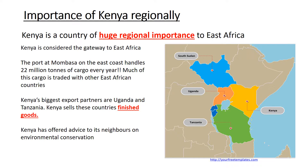Kenya also has significant regional importance because of its economic size and its very important port, Mombasa, which we will cover again in the Toyota case study. 22 million tons of cargo pass through this port every year, and much of that imported cargo is traded with other East African countries — which is why Kenya is considered the gateway to East Africa.